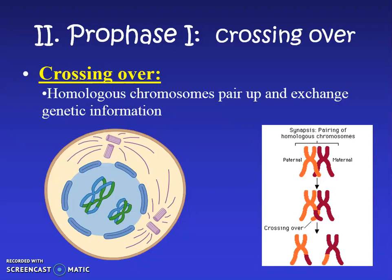Crossing over is what allows sexual reproduction — making sperm and egg — to be super unique. It happens differently every time, which is why you and your sibling aren't exactly the same. Every time sperm or eggs are made by a mom or dad, they're a little different, and a lot of that has to do with crossing over.